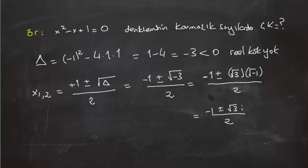Şimdi aslında biz bu kökleri gösterebiliriz. (-1 ± √3·i) / 2 çıktı. Şimdi bu kökleri göstermeye çalışalım.